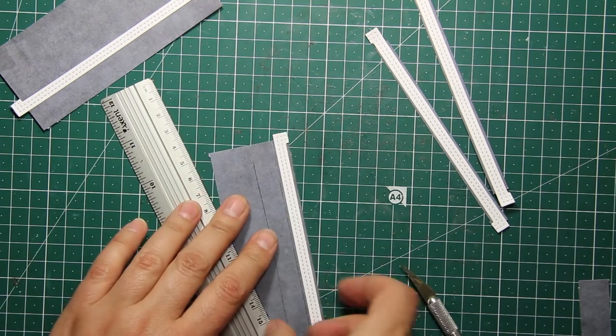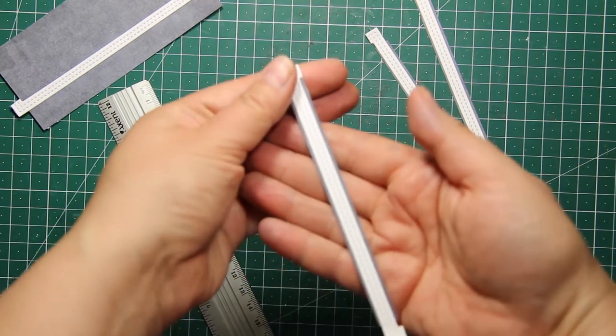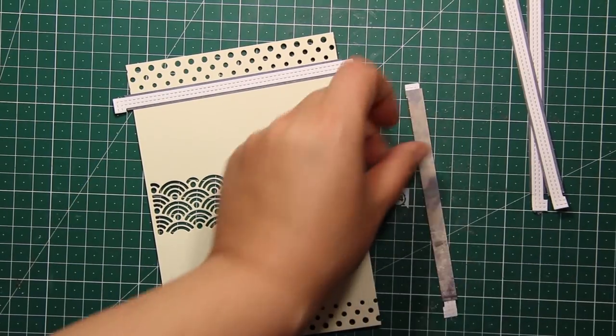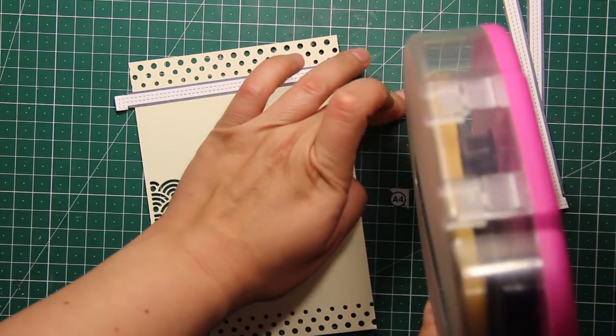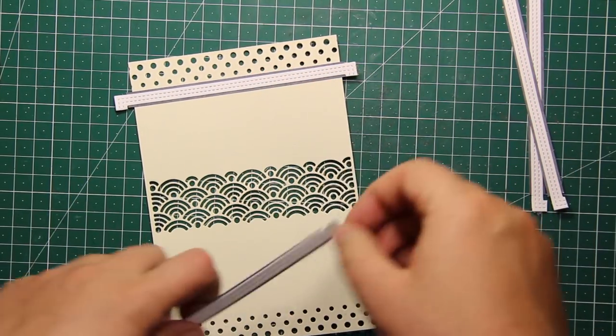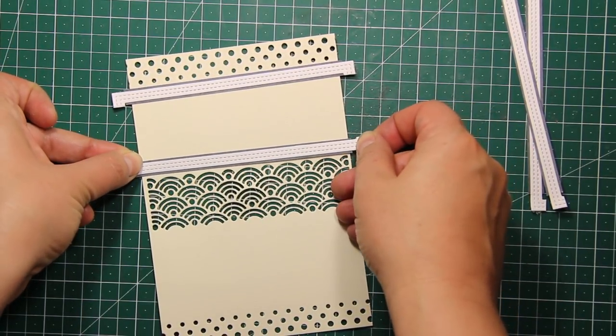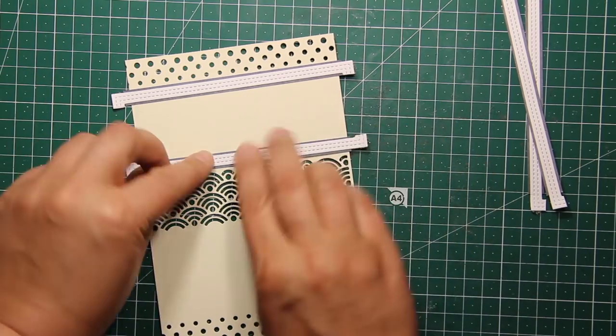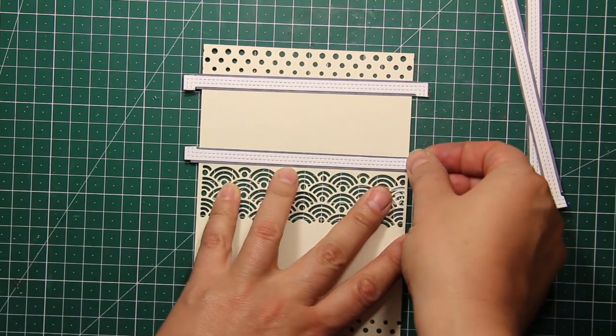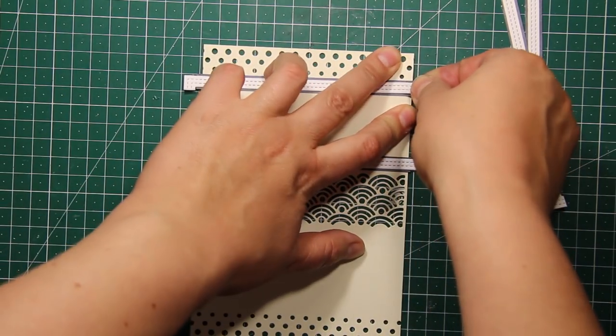This is the super simple way to add some dimension and color to that border. Now I'm applying some double sided tape and I'm basically sticking down those strips right next to the die cut borders. And this way I'm kind of framing them.